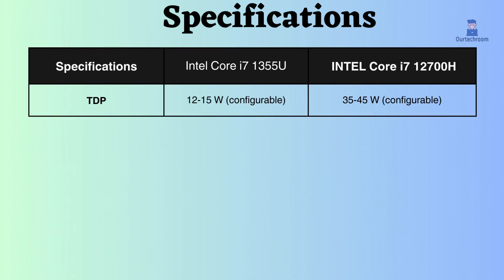The Intel Core i7-1355U has a significantly lower TDP than the Intel Core i7-12700H. This means it will consume less power, which is important for laptop users. The lower TDP also means the i7-1355U will generate less heat, which can help extend the life of the laptop battery.